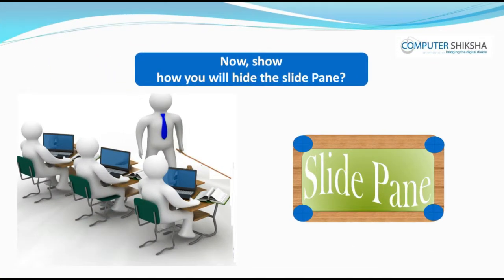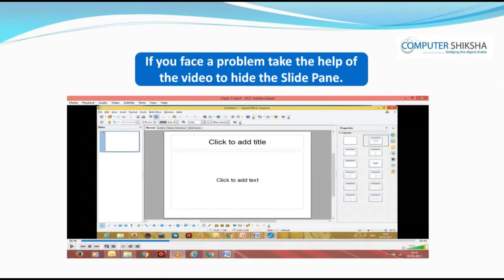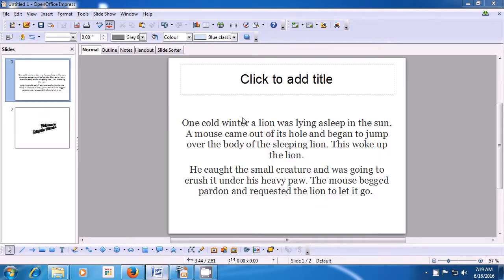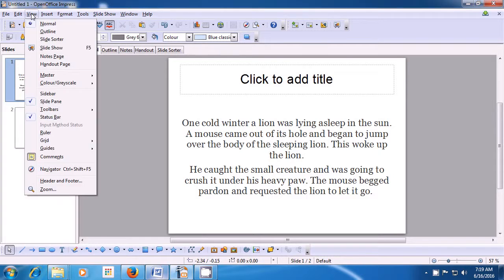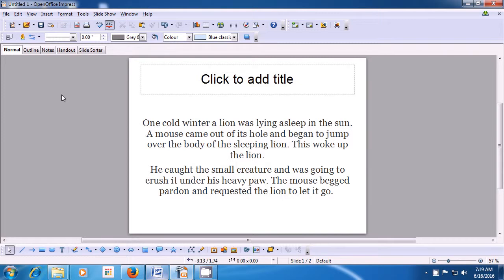Next, show how you will hide the slide pane. With this video, we will learn how to hide the slide pane. To hide the slide pane, we take our pointer to the View menu in the menu bar and click on that. From the options which are available to you, click on the Slide Pane option. As soon as you click on the Slide Pane option, you will see that the slide pane on the left side of the slide gets hidden. This is how you use the slide pane.